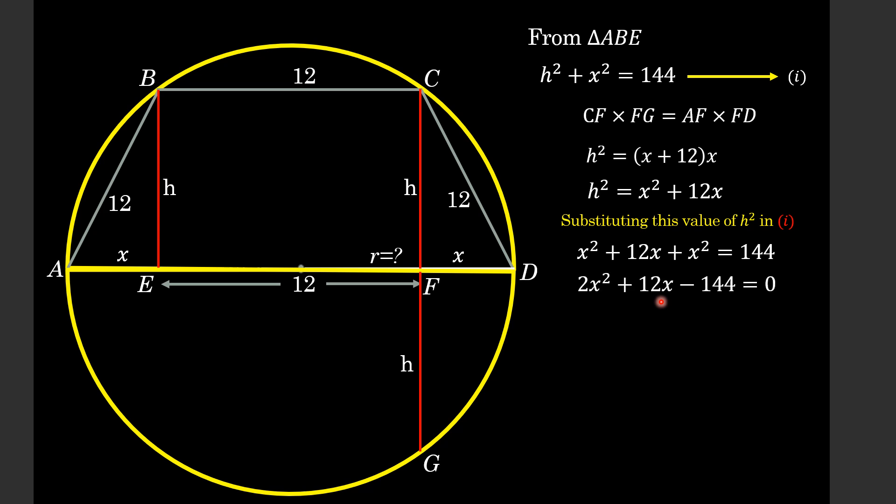And by some simplification we will get 2x² + 12x - 144 = 0. And dividing by 2 the whole equation, we will get x² + 6x - 72 = 0.